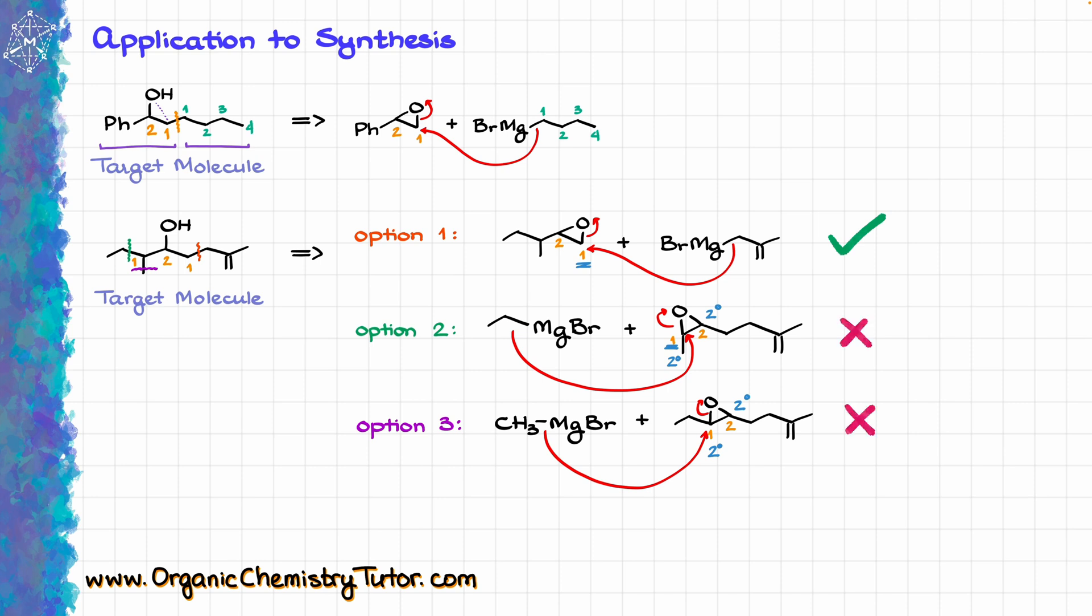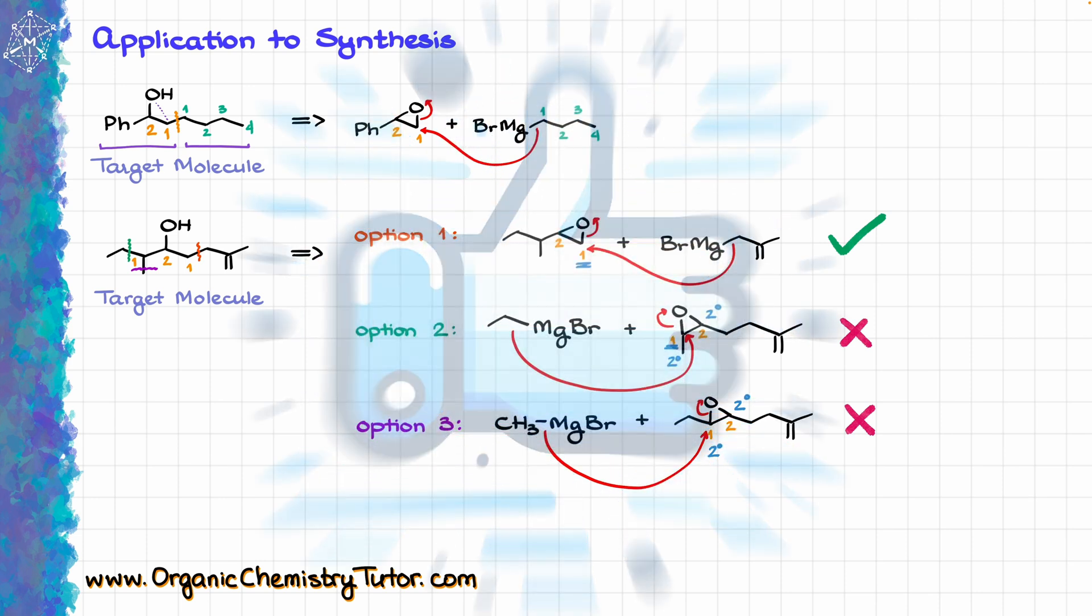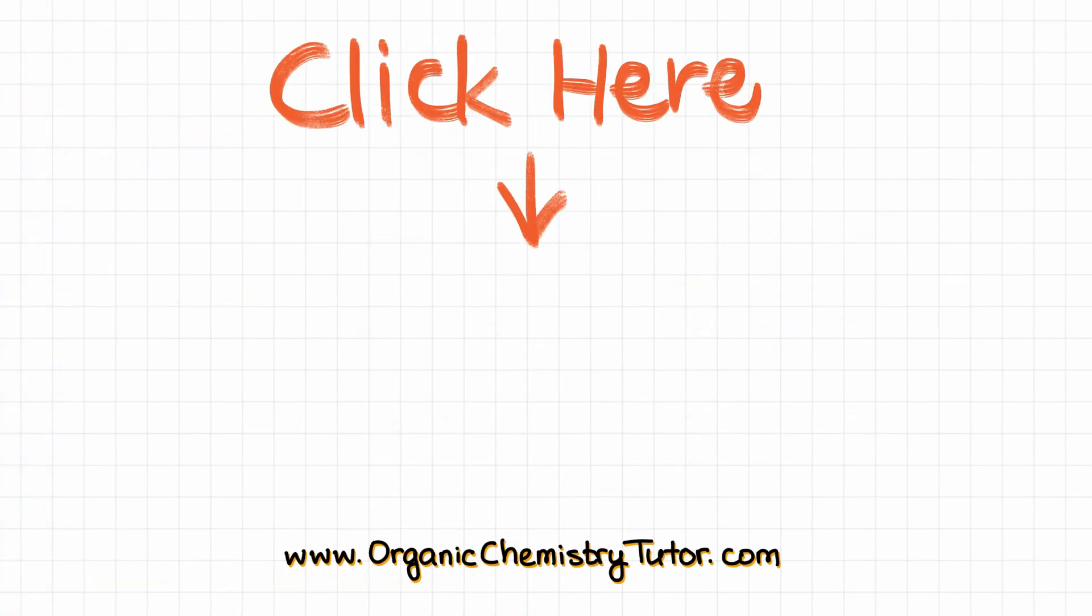So while the Grignard reaction can be a very powerful synthetic tool when used with epoxide, it is not a magic pill and you always have to analyze your molecules very carefully because not every combination is going to work. So the next time you are planning your multi-step synthesis using the Grignard reaction, think if maybe the reaction of the Grignard reagent with the epoxide might be a good way to go. And as always, thank you for watching. If you learned something new today, boop the like button and subscribe for more. Check out this video next and I will see you next time.